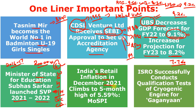India's retail inflation in December 2021 climbed to a 5-month high of 5.59%. This is data from the Ministry of Statistics and Programme Implementation. The Union Minister is Rao Inderjit Singh, with constituency Gurugram, Haryana.